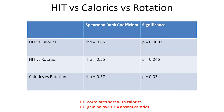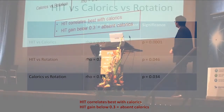Correlation of the head impulse test to rotations is still pretty good, but is less than to calorics. Calorics versus rotation is about the same as head impulse to rotation. So caloric to rotation is about the same as head impulse to rotations, and head impulse to caloric corresponds really well.